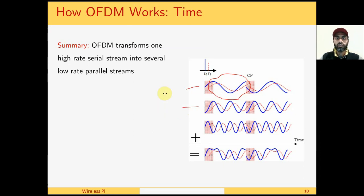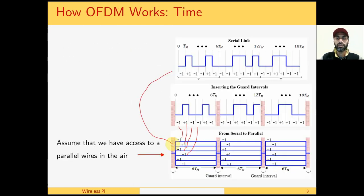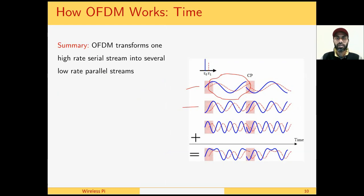In summary, we can say that OFDM transforms one high rate serial stream into several low rate parallel streams like this, and the introduction of this low rate parallel stream makes the equalization simpler.